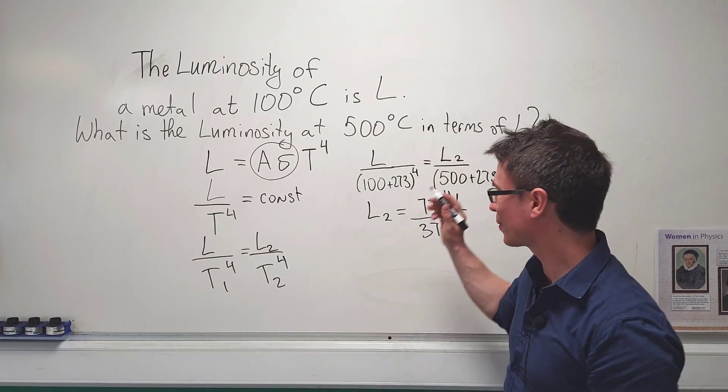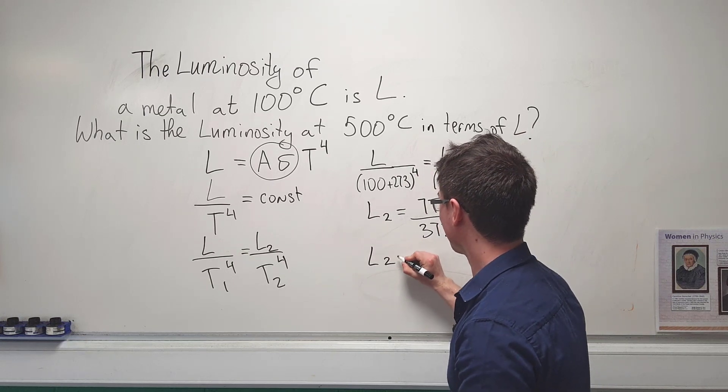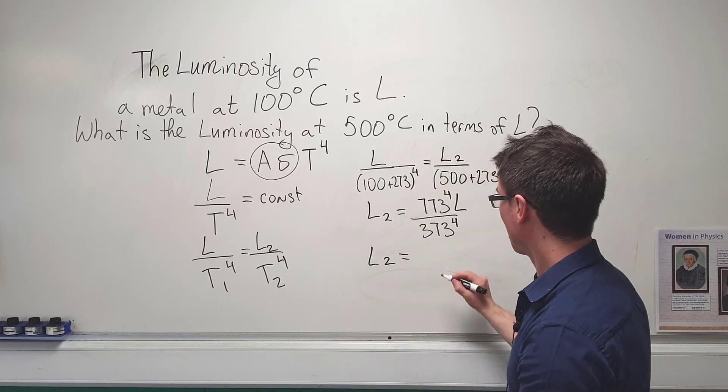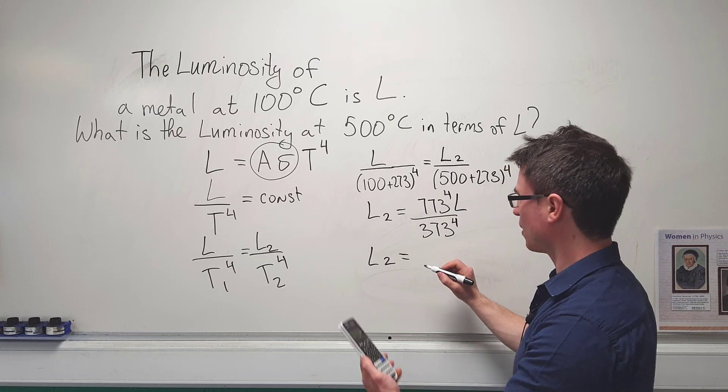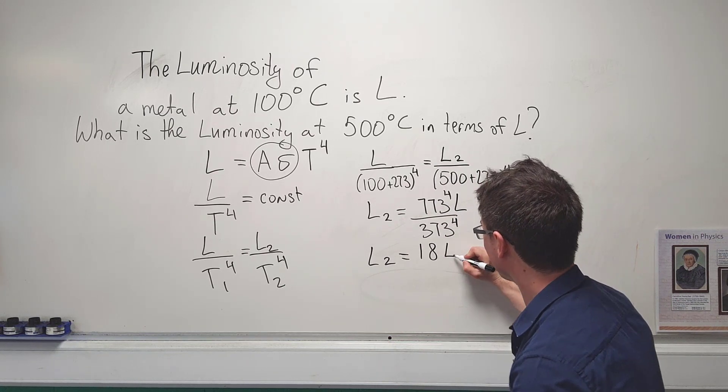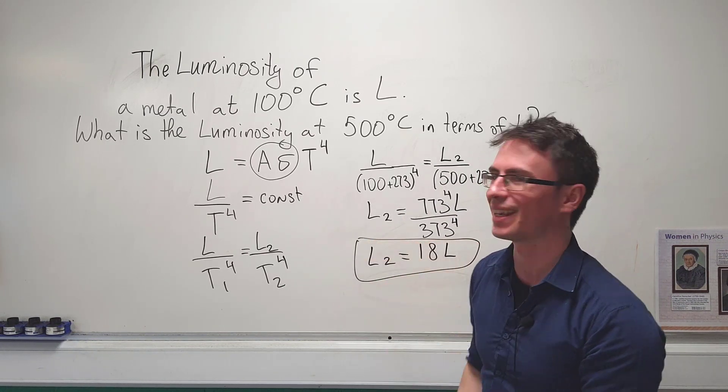And if we put this into a calculator we're going to find that the final intensity is about 18.4, let's call it 18 times the original intensity.